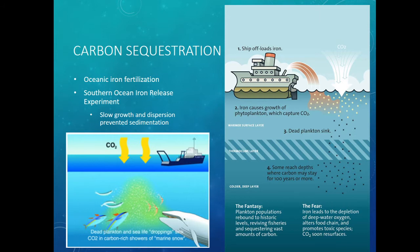They did a large-scale experiment — the Southern Ocean Iron Release Experiment, or SOIREE — and what they saw was that the growth was too slow and the plankton basically spread out rather than sinking down. This idea has been largely abandoned, because it's probably not a great idea to make a huge portion of our ocean eutrophic to stop climate change when we're trying to save our oceans.